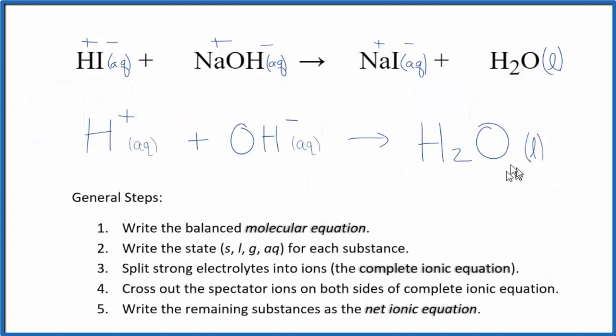So this is the net ionic equation for hydroiotic acid plus sodium hydroxide. You'll note that charge is conserved. We have a positive and a negative. Those cancel out to give us a neutral compound. And we have one, two hydrogens here, two here. One oxygen and one oxygen. So mass is also conserved.